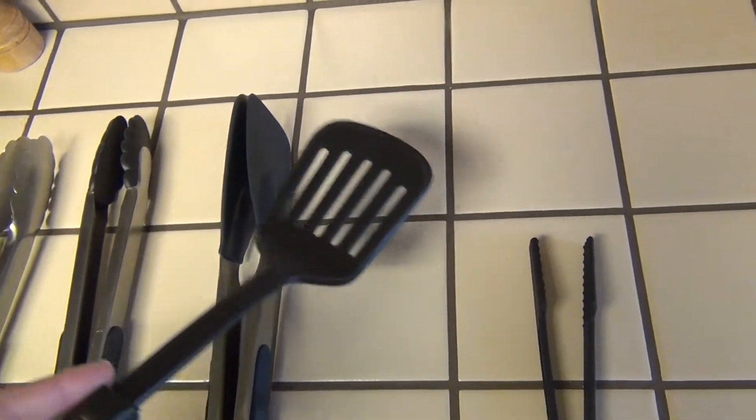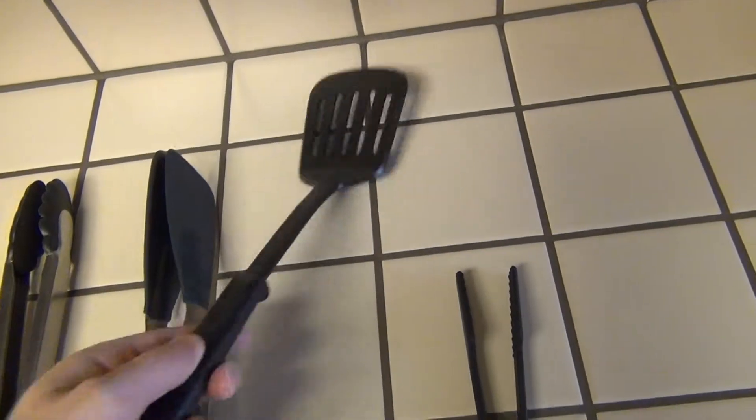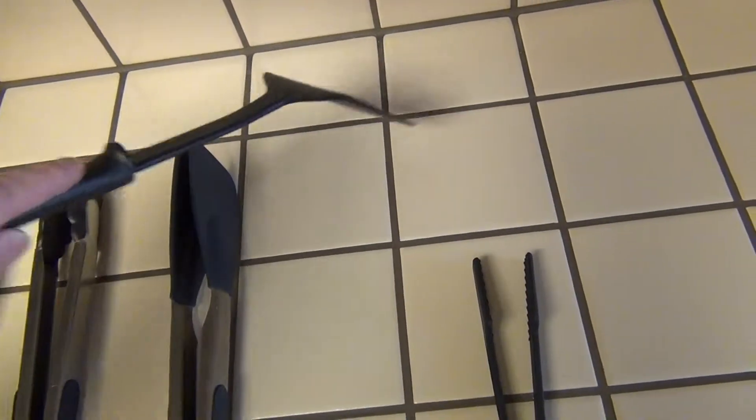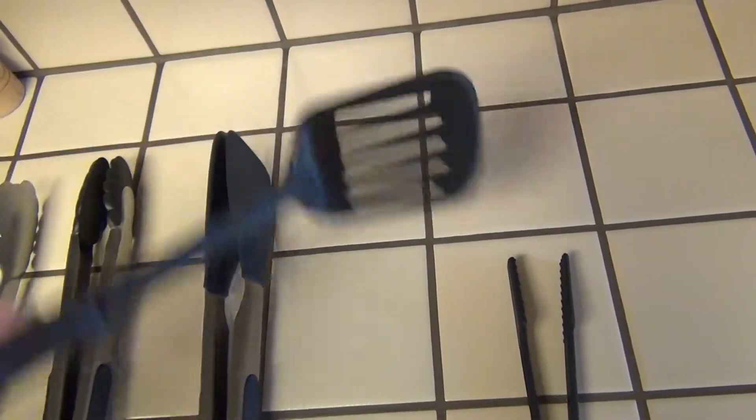Or if I need to flip, if I have a pan full of items, I just end up dumping them on top of each other and then resorting them with the end of the spatula at the end.